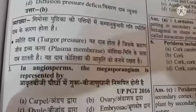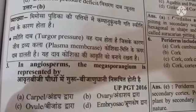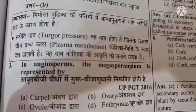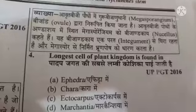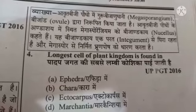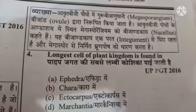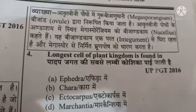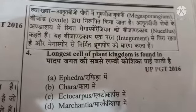Next question: in angiosperms, the megasporangium is represented by option A carpel, option B ovary, option C ovule, option D embryo sac. The right answer is option C, ovule. Next question: the longest cell of the plant kingdom is found in option A Caulerpa, option B Chara, option C Ectocarpus, option D Marchantia. The right answer is option B, Chara.